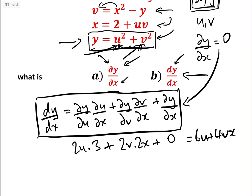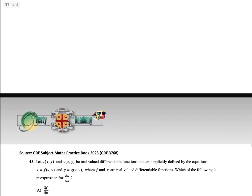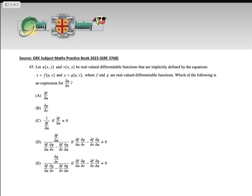So the total differential of y with respect to x — including both the direct part, which we know is zero, and the indirect part via u and v — is equal to 6u + 4vx. That's the first question. Now the second question is a little question we found on the GRE subject maths practice paper for 2023.